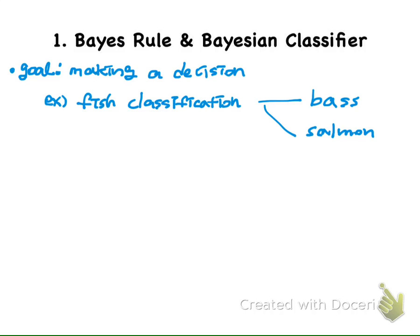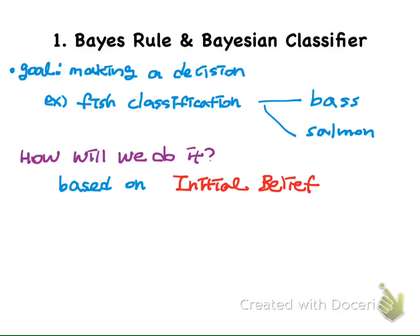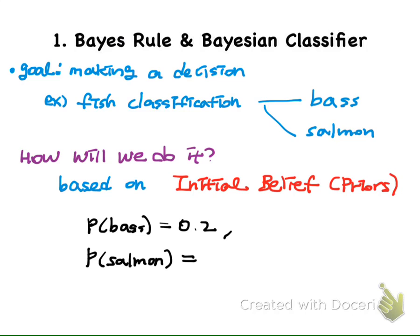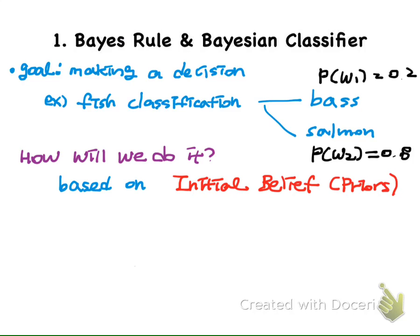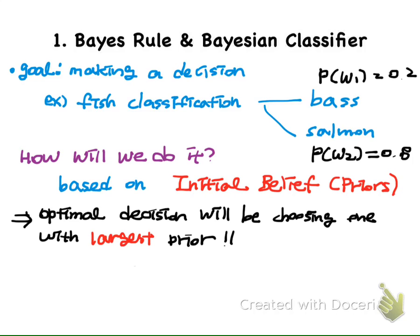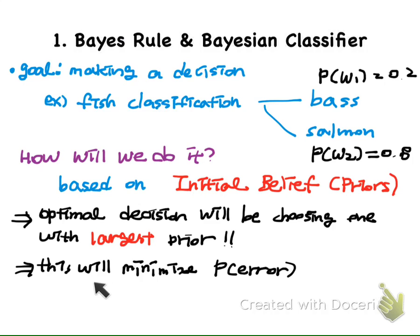For example, we want to do a fish classification. Let's say we have only two kinds of fish in the total population: one is bass and the other is salmon. One way we can do it is to make a decision based on initial belief, called priors. We know that in the total population, 20% is bass and 80% is salmon, so the probability is 0.2 for bass and 0.8 for salmon. Given this, the optimal decision will be choosing the one with the largest prior, which is salmon. So if we always classify the fish as salmon, it will be an optimal decision in this setting and will minimize the probability of classification errors.